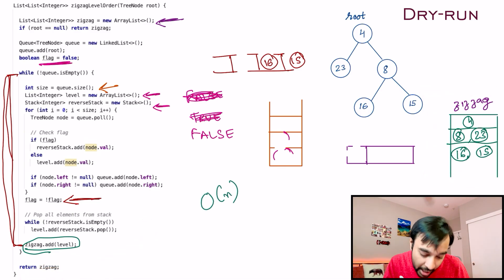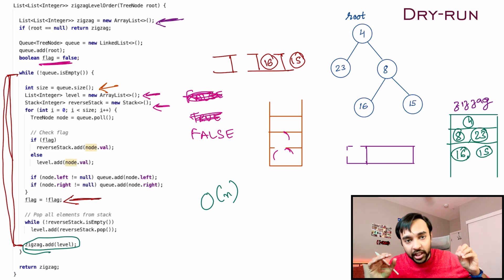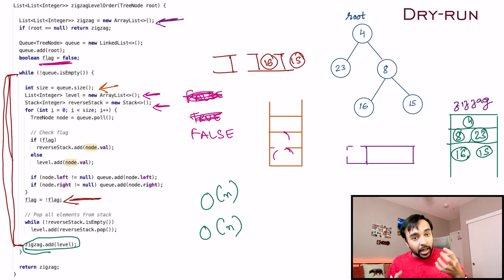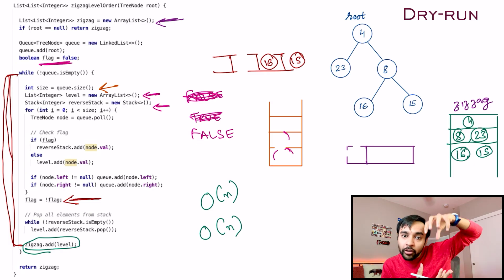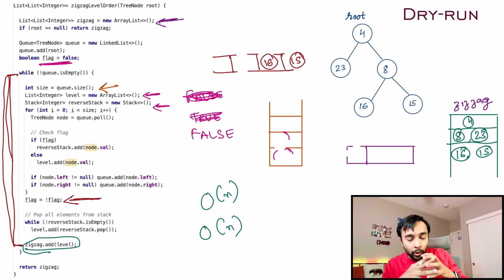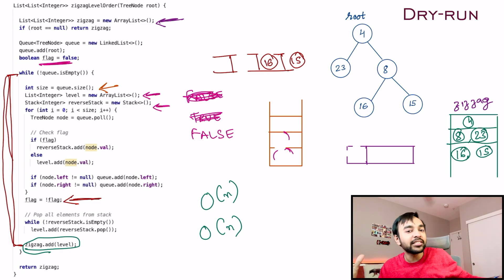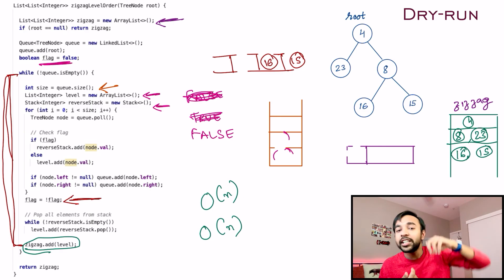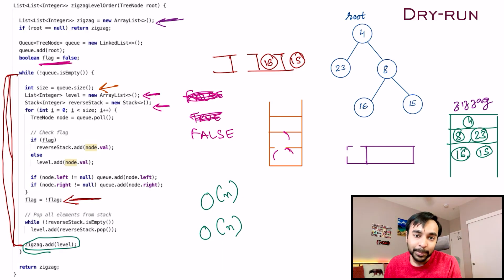The time complexity of this solution is O(n) because you have to iterate over every node in the binary tree. The space complexity is also O(n) because you need extra space to store all these elements in a stack — at the very last level you could have to traverse it in reverse order, which is why you need that extra stack space.